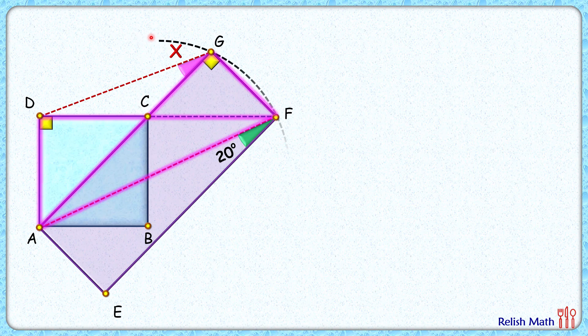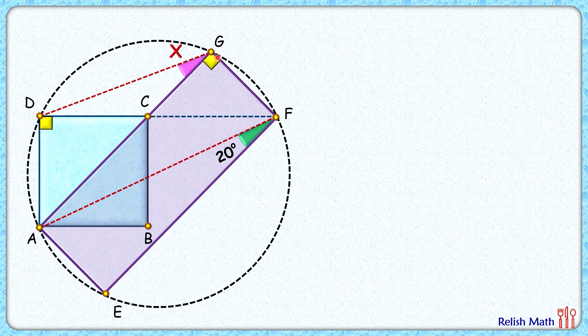Now, as this yellow figure is a cyclic quadrilateral, the opposite angles will be supplementary. Angle A plus angle G equals 180 degrees. Angle A comprises angle DAG and angle GAF. Angle G is made up of angle X and 90 degrees, and their sum is 180.